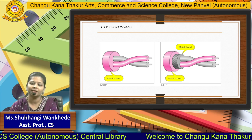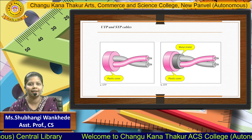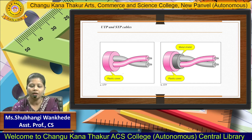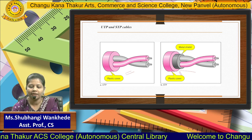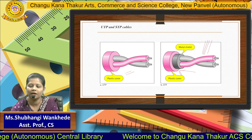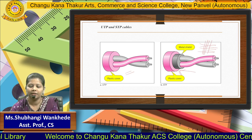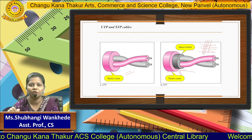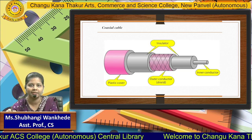Twisted pair cable is of two types: UTP and STP, where UTP stands for Unshielded Twisted Pair and STP stands for Shielded Twisted Pair. The difference is that in Shielded Twisted Pair, an extra metal shield is present — like a mesh — between the plastic cover and the conductor. In Unshielded Twisted Pair, this metal shield is not present. That is the difference between UTP and STP.